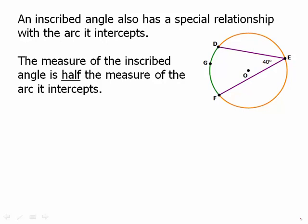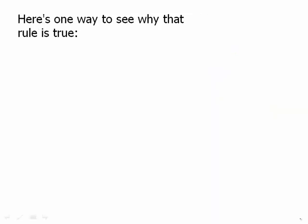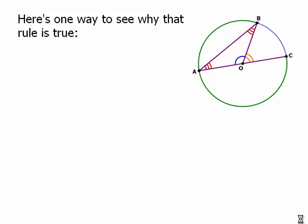The measure of the inscribed angle is half the measure of the arc it intercepts. For example, here we have an inscribed angle of 40 degrees — that has to be half the arc, so the arc has to be 80 degrees. Here's one way to see why that rule is true. In this diagram, the gold angle BOC is the central angle, and the red angle BAC at A is the inscribed angle. We'd like to figure out the relationship of that inscribed angle to the arc.